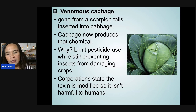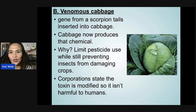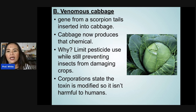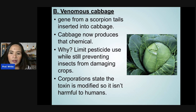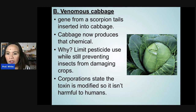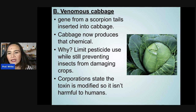Another example is venomous cabbage, where genes from scorpion tails are inserted into the cabbage so it produces a chemical that limits pesticide use while still preventing insects from damaging the crops. Corporations state the toxin is modified so it is not harmful to humans, only to pests.